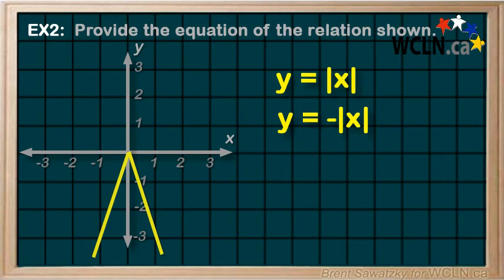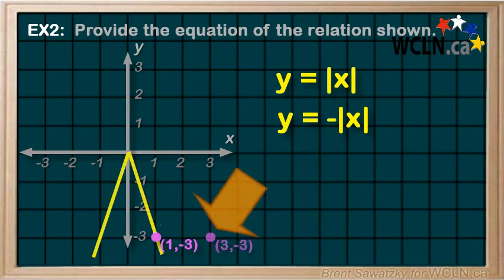Now, we see that our graph passes through (1, -3). Now, our reflected base absolute would cross through (3, -3). So, our graph is definitely skinnier than the base absolute.